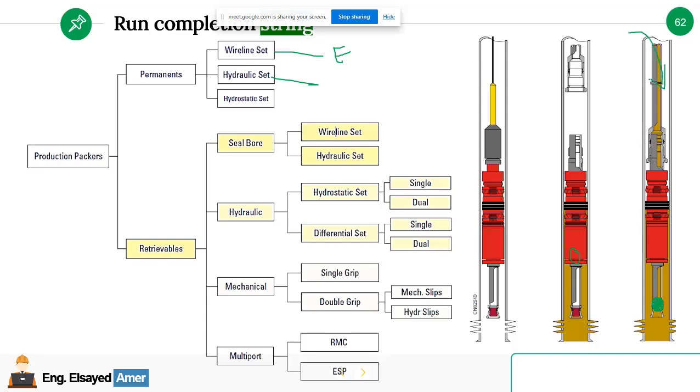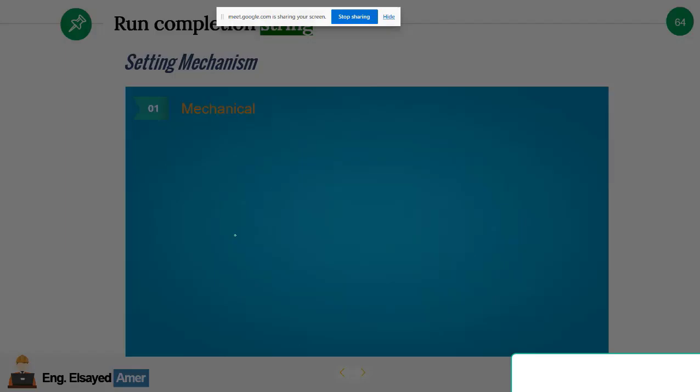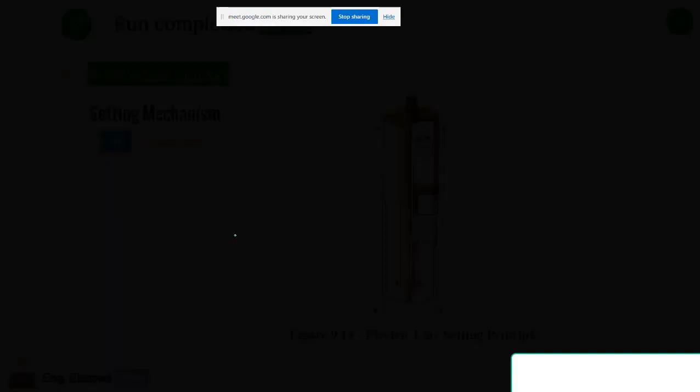Then you start to pump a hydraulic liquid, which is the completion fluid all the time. Once you pump this liquid into the tubing, you destroy a shear pin. You shear a pin inside this packer and release the packing element and the slips of the packer. So it takes its action to hang it with the casing and prevent the movement of reservoir fluid to the annulus. Also, we have a mechanical set packer by rotation, by compression, by tension. All of these are mechanisms of installing the packer.